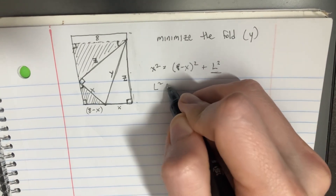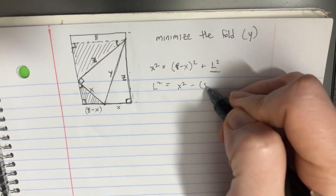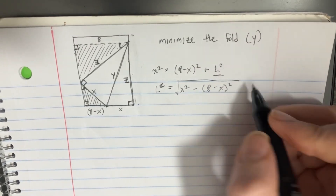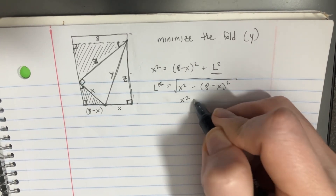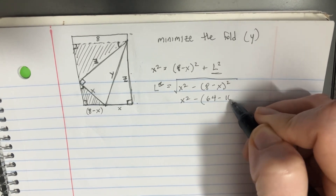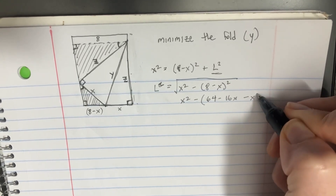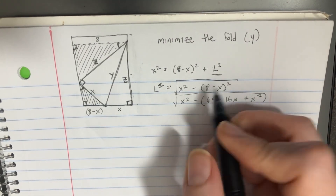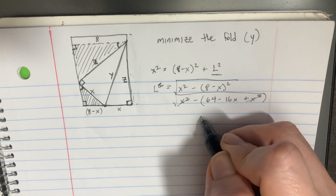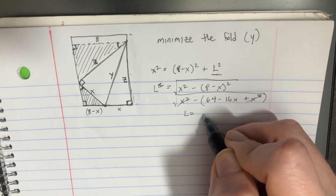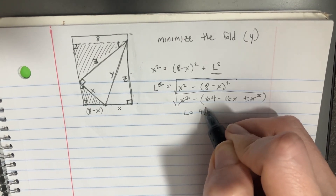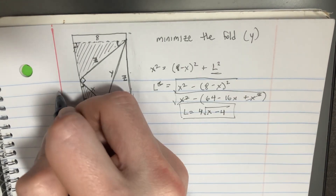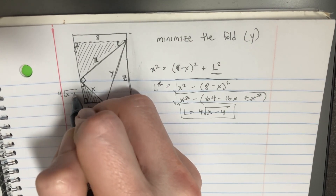So we're going to say L squared equals x squared minus (x minus 8) squared, and then we'll have a square root here. So if we were to try to solve for this: x squared minus, we get 64 minus 16x minus x squared, so plus x squared, still square rooted here. We'll see that these x squared terms are going to cancel, and we're going to be left with essentially L equals 4 times the square root of x minus 4. So we figured out what L is: this is 4 times the square root of x minus 4.